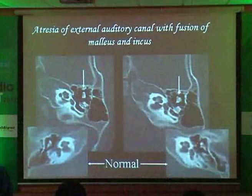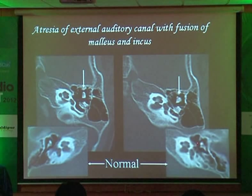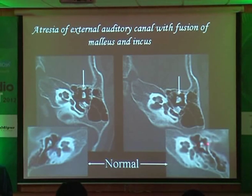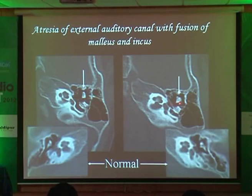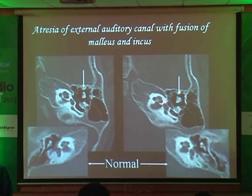This is the normal below. As Manoj rightly said, we call this the ice cream cone appearance. You have the malleus anteriorly, incus posteriorly, the incudomalleolar joint — classical ice cream cone appearance. This black hypodense line is the joint. But look at what has happened here: the whole anatomy is lost. You don't see the ice cream cone appearance, you don't see the incudomalleolar joint — you just see fusion of the incus and malleus. This is the cochlea, with all the turns beautifully seen.